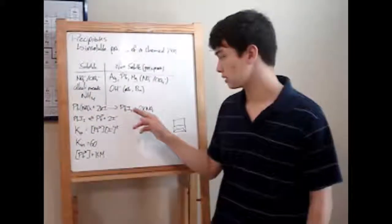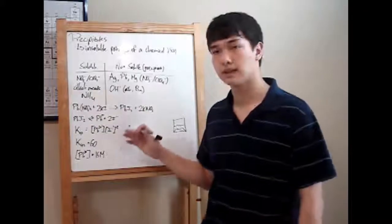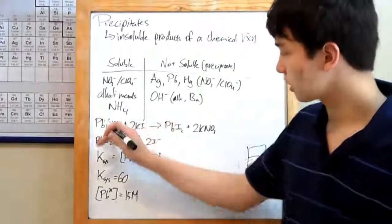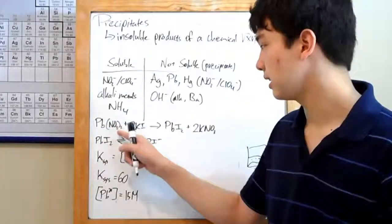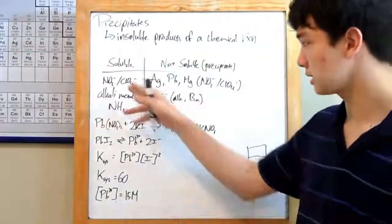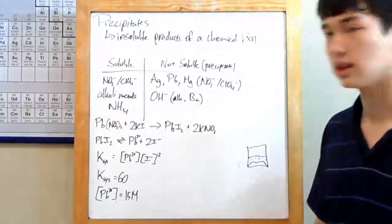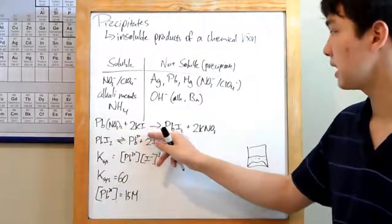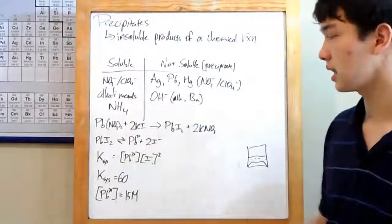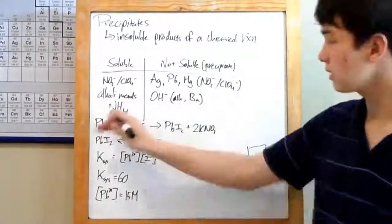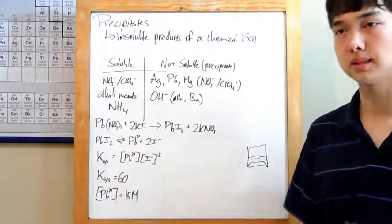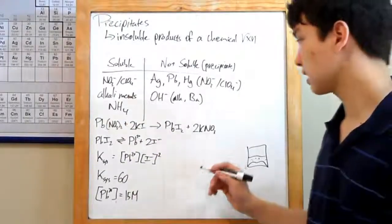So turning back to our reaction over here, we can easily identify the precipitate we produced. Over on this side, we've got lead and nitrate. Those are just a bunch of ions. They're soluble because they're attached to a nitrate. And over here, potassium iodide. Well, since you've got an alkali metal attached to it, then it's got to be soluble. So neither of these are precipitates. You'll just see them as those clear liquids. Put them together, though.